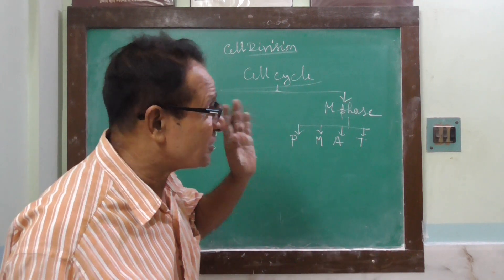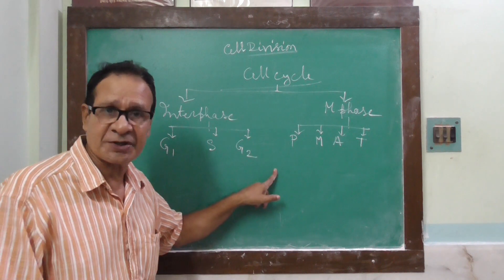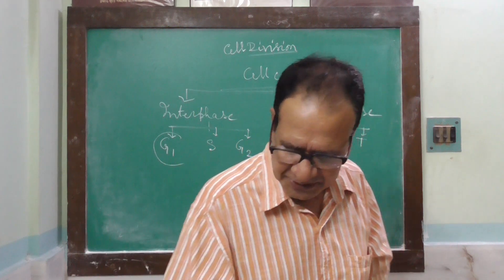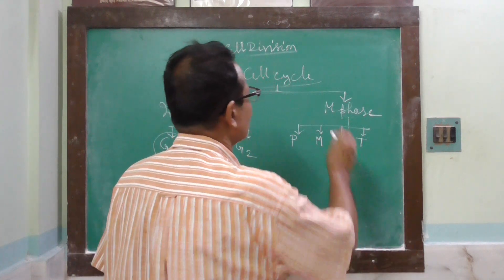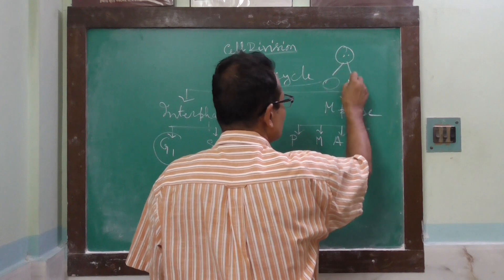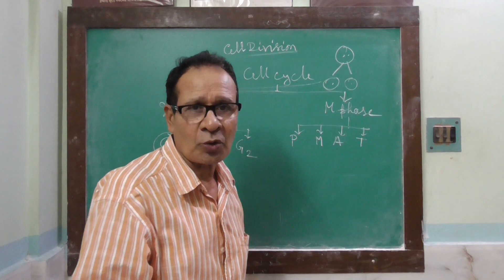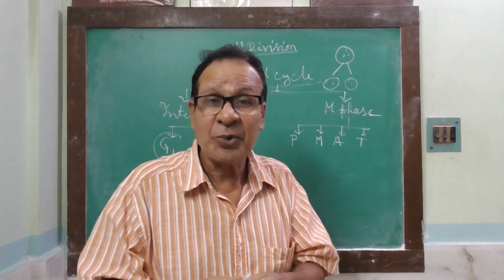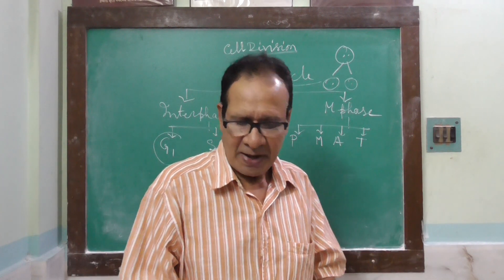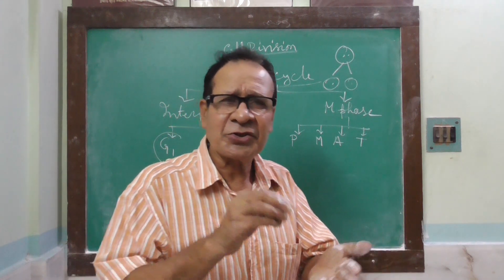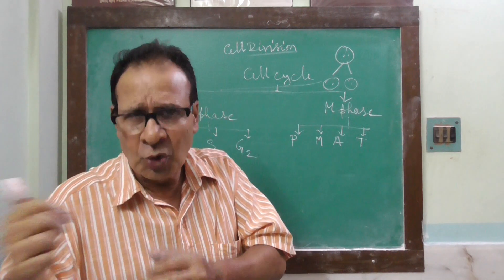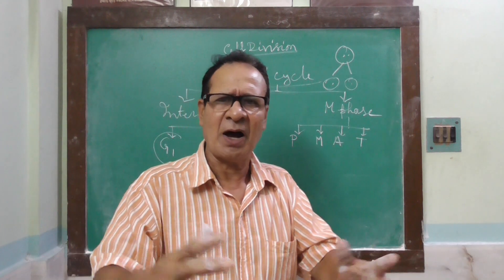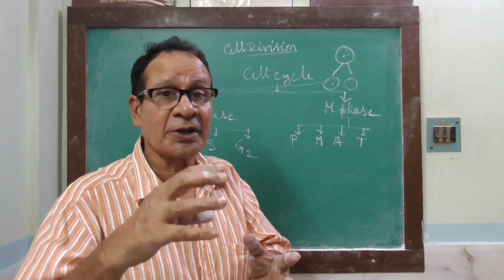During G1, after the formation of a daughter cell which is small in size, it gradually increases in size because of the synthesis of various substances. Metabolic rate becomes very high. Synthesis of protein, RNA, nucleotides, ATP, and various cell organelles — mitochondria, Golgi bodies, endoplasmic reticulum, etc. — are formed, and so the cell gradually increases in volume.